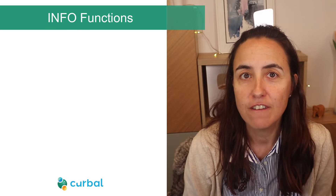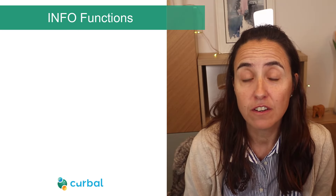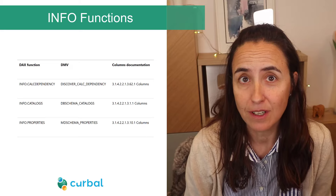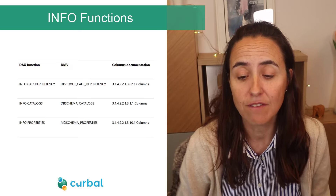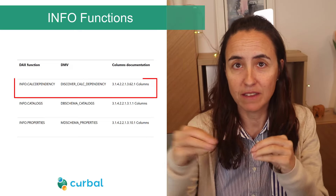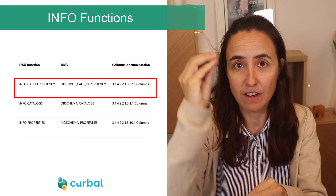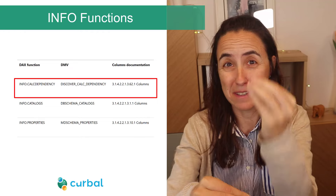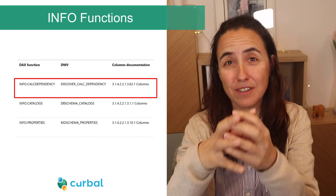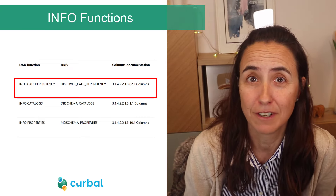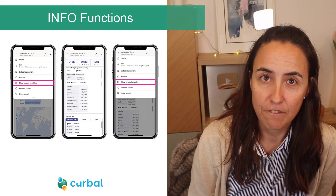There are new info functions. The best one is that you can now see the dependency of measures — so if a measure contains another measure, you can actually get that dependency into a table. Very, very nice.